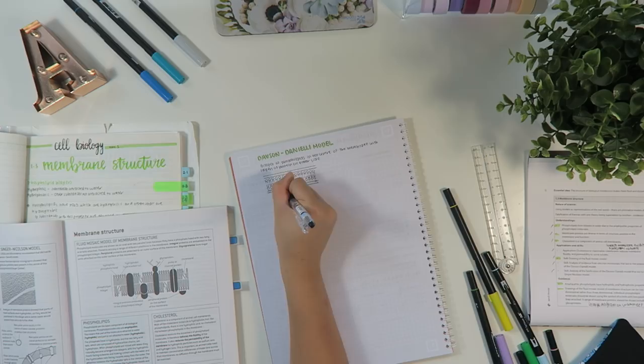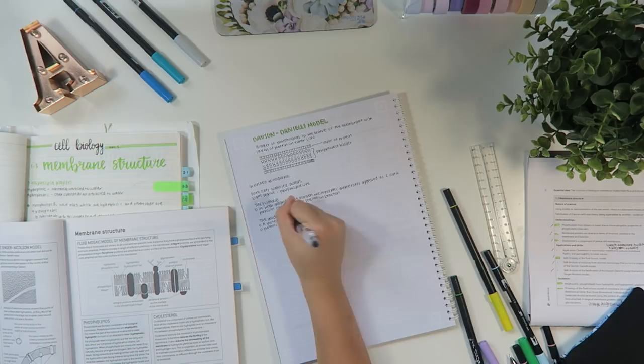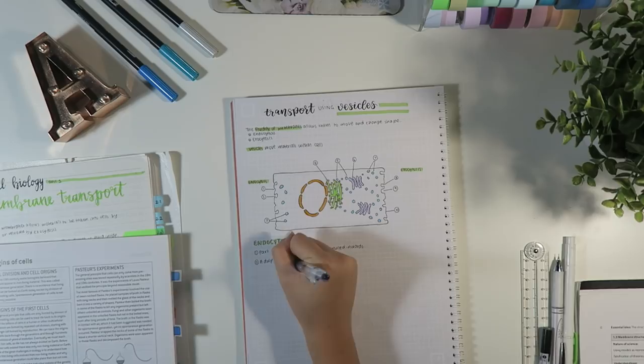One thing I wanted to make pretty clear is that if you're going to draw a diagram and take the time to make it look nice, then make sure you're annotating it and labeling it in depth. And that's just so it supports your material rather than wasting your time just drawing.